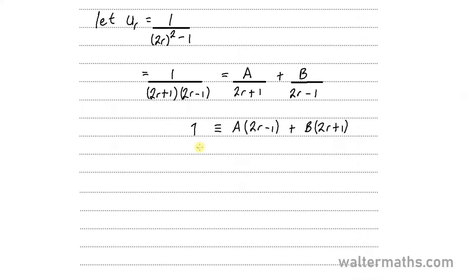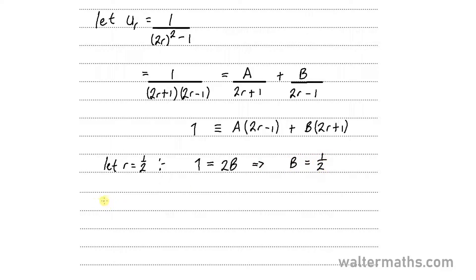Using the cover-up method to find A and B: let R equal one-half, so the left side gives 1 equals 2B, therefore B equals one-half. Then let R equal negative one-half, so the left side gives 1 equals negative 2A, therefore A equals negative one-half.